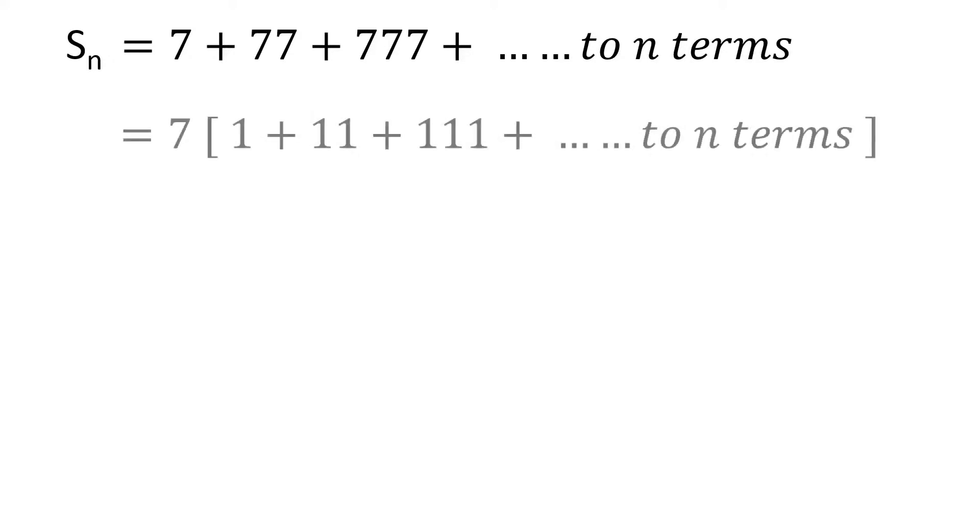Let Sn denote the sum of this series. The first step to solve this problem that most of you must have done is to factor out a 7 from each term. Now what we have in the square brackets is the similar series we started with. The only difference is, now we have ones instead of 7s.